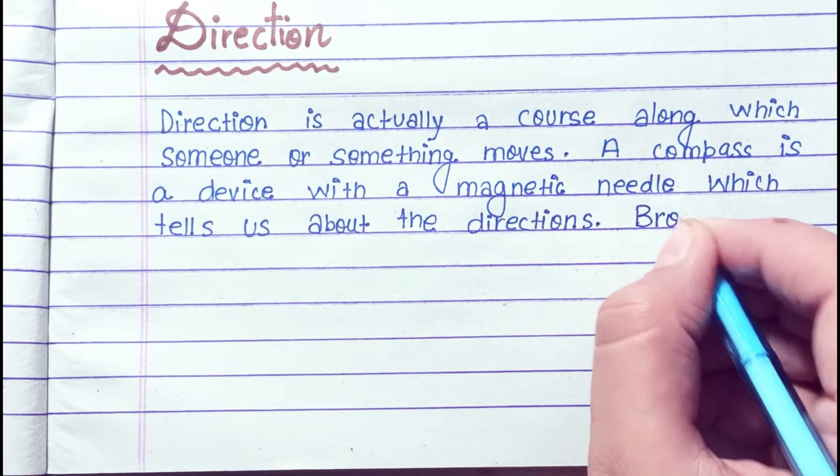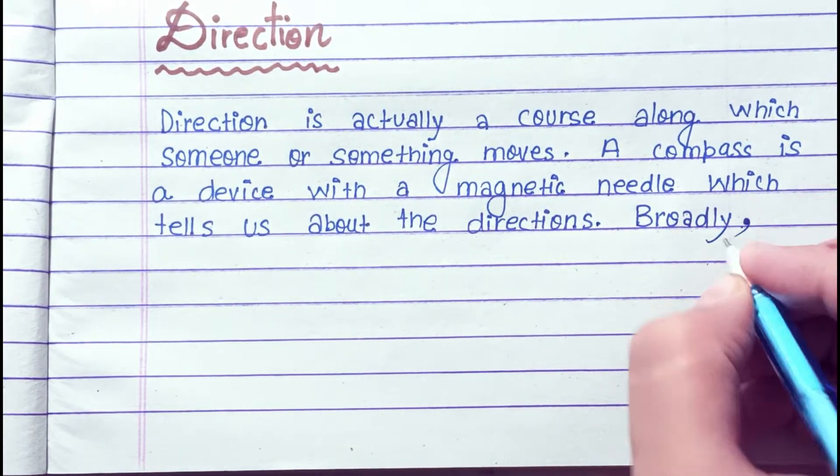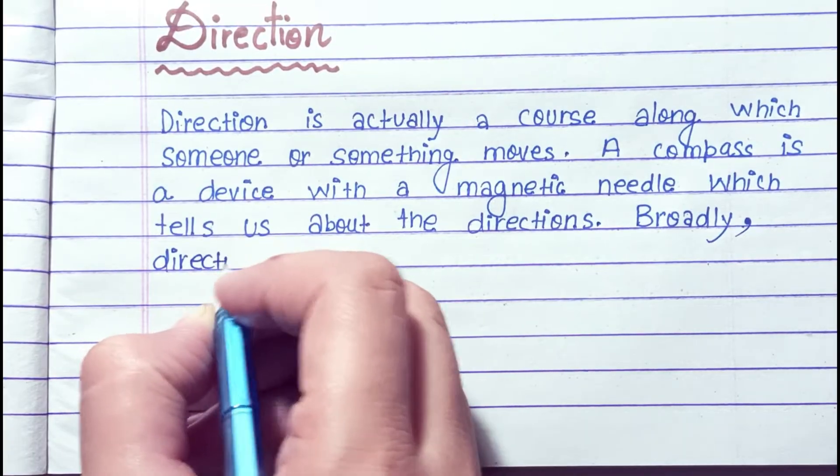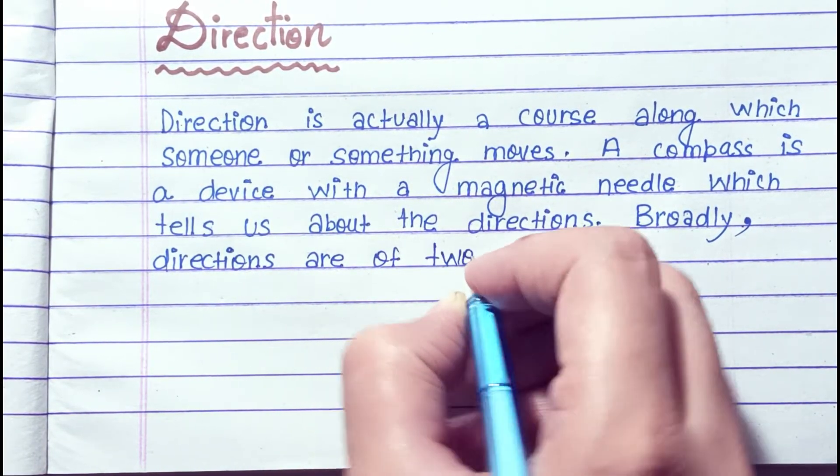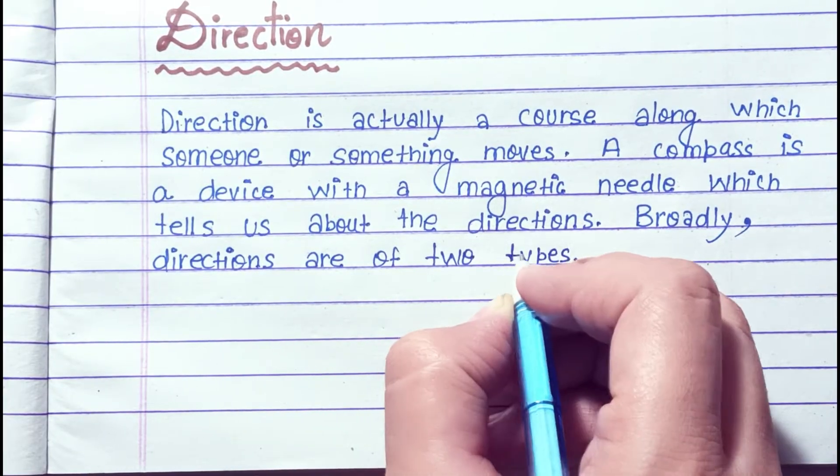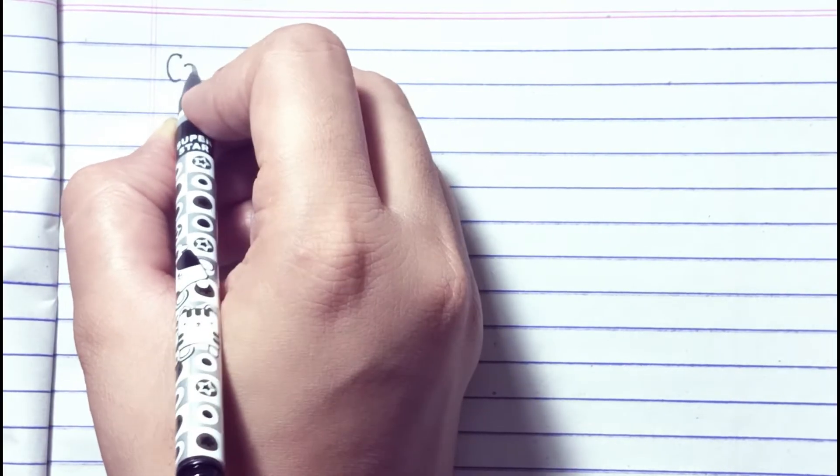Direction. Direction is actually a course along which someone or something moves. A compass is a device with a magnetic needle which tells us about the directions. Broadly, directions are of two types.